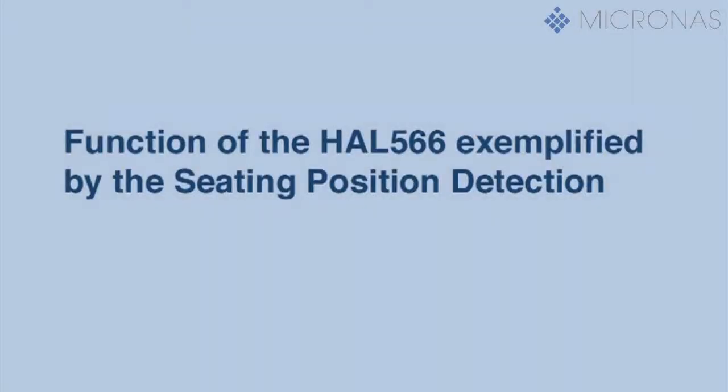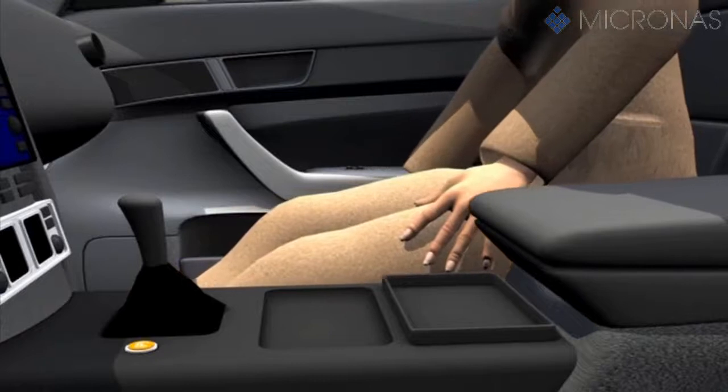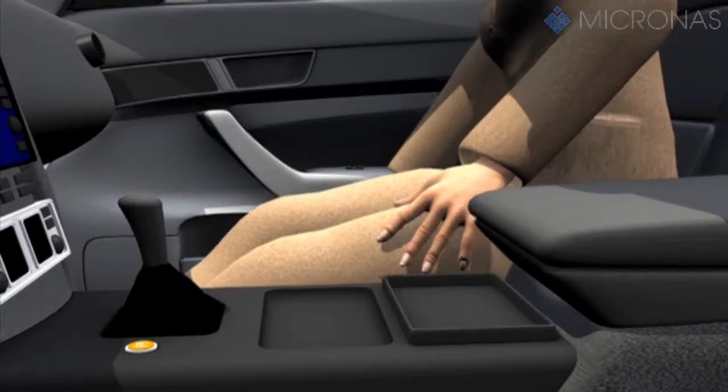A two-wire hall sensor is used to detect the position of the passenger seat in the front one-third of the seat rail or in the rear two-thirds of the seat rail. Depending on the seat position, the passenger airbag is to ignite earlier or later.